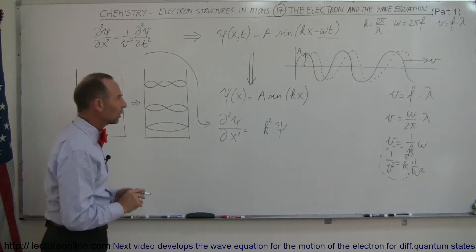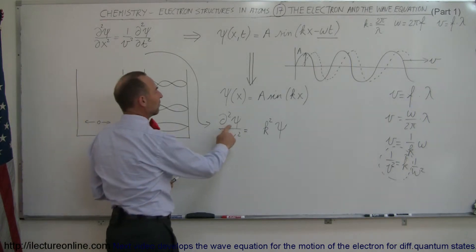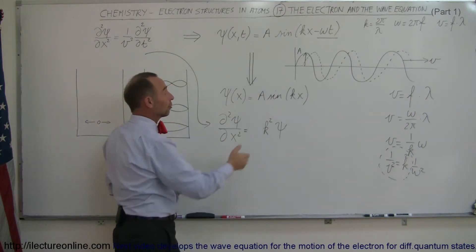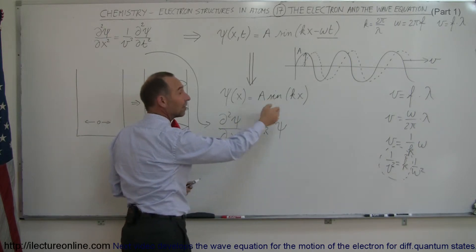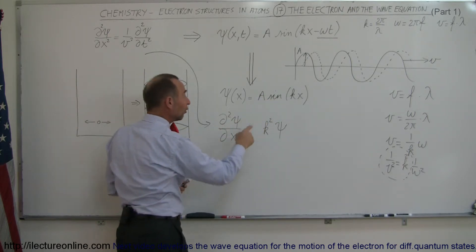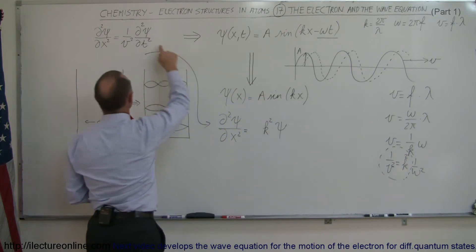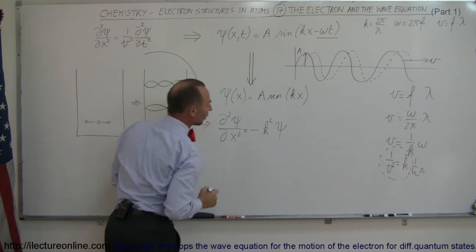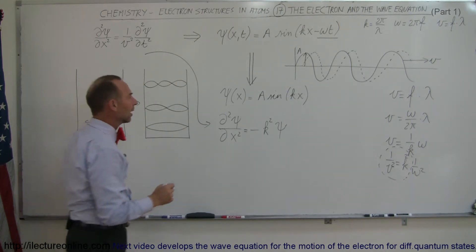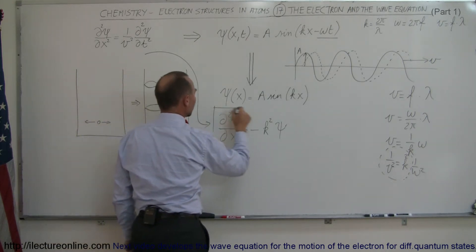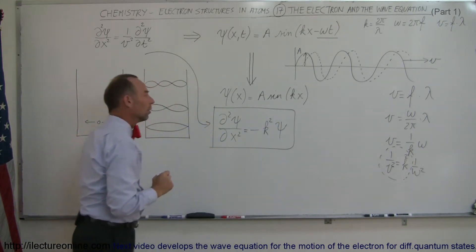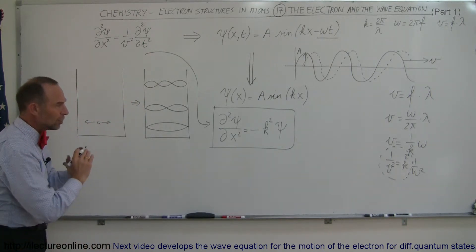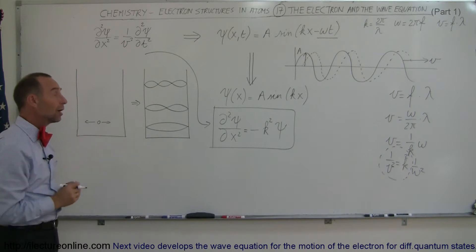One more thing we have to realize: when we take the second derivative of a sine function, we get the negative sine back, because the first derivative is the cosine, and then the derivative of cosine is negative sine — so we get a negative. Since we're not doing that on the right side, we have to account for the negative to make it work. So now we realize that this equation right here describes the electron motion in a box, because we know we have to have a standing wave equation.